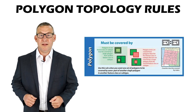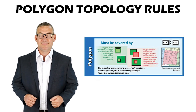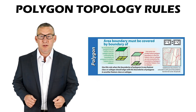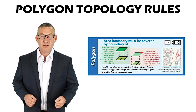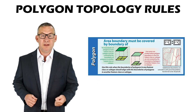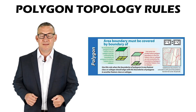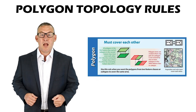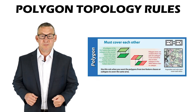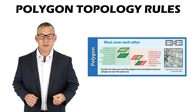Must Be Covered By A Single Feature Of — polygons must be covered by a single polygon from another feature class. Area Boundary Must Be Covered By Boundary Of — the boundaries of polygons must be covered by the boundaries of polygons in another feature class. Must Cover Each Other — polygons in two feature classes must cover each other.